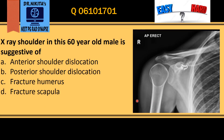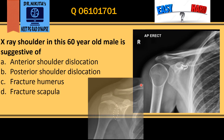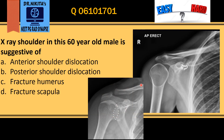We have to identify the abnormality in this X-ray shoulder AP view. Before that, let us look at the normal X-ray shoulder. In a normal X-ray shoulder, the head of the humerus and the glenoid are congruent, and there is an overlap between the two in the form of a half moon.